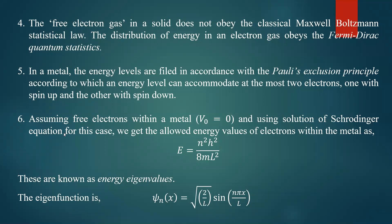Sixth point: assuming the free electrons within the metal have lower potential energy — almost zero — and using the solution of the Schrödinger equation for this case, we get the allowed energy values of electrons within the metal as E = n²h² / 8mL². This is the expression for energy of a particle in a one-dimensional potential well of width L, where n is the quantum number, h is Planck's constant, and m is the mass of the electron.